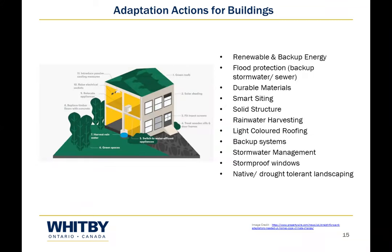For building adaptation, we want to think about renewable and backup energy — an electric generator in case of power outage. We need to think about flood protection, such as backup stormwater or sewage systems. We want to consider durable materials that can handle getting wet in a flood or handle heat well. Smart siting is important — perhaps building on a flood plain isn't a great idea. Rainwater harvesting, light-colored roofing, and stormwater management — installing rain gardens or planting native and pollinator-friendly species — can all help your home become more resilient to climate change.